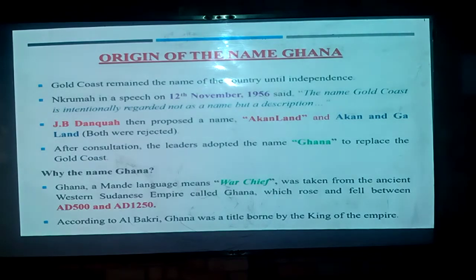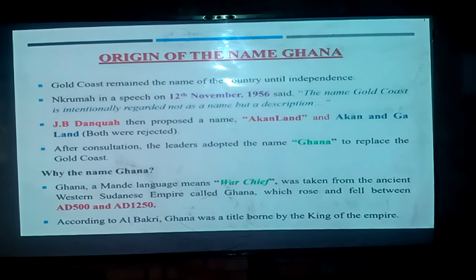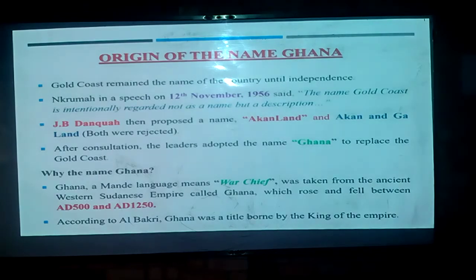Therefore, there was a need for them to get a proper name for the newfound independent nation. J.B. Danquah then proposed a name. According to J.B. Danquah, he said that we should call the new independent country 'Akan Land,' and also 'Akan Nga Land.' Initially he said Akan Land, but it was rejected on the basis that it only referred to the Akan. He then came back to say, 'Then let's say Akan Nga Land.'